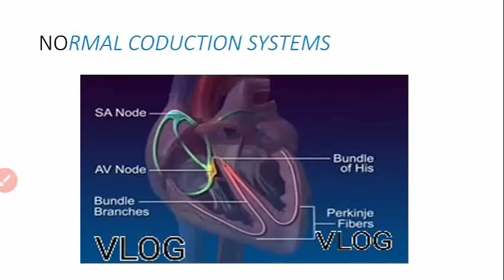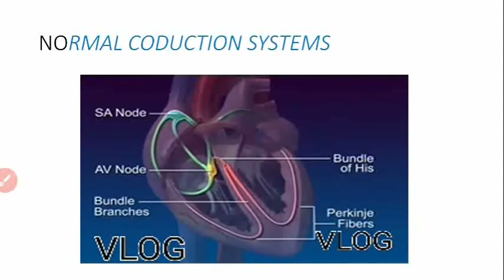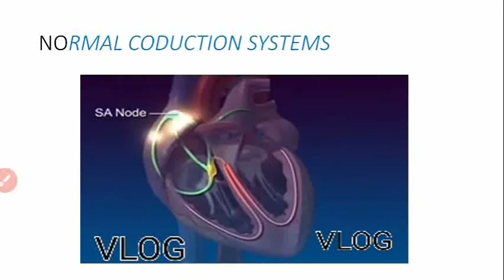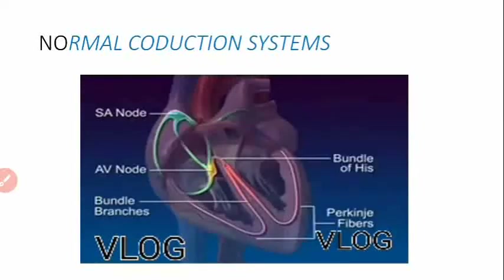So here, electric impulses are generated from the SA node, then transmitted into the AV node, then the bundle of His, then the Purkinje fibers — that is the normal conduction system.